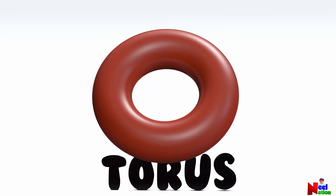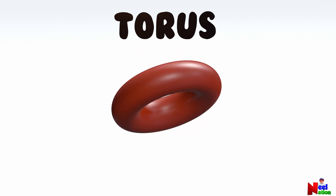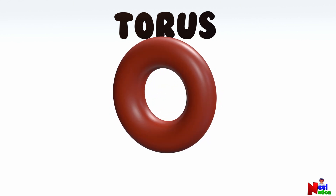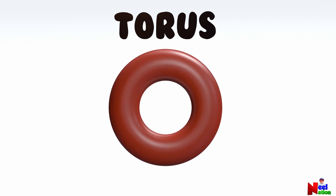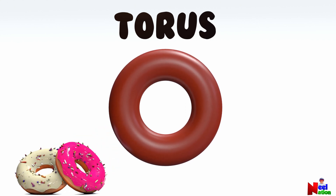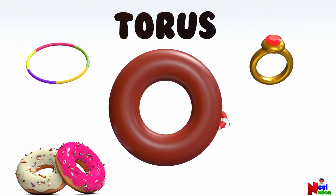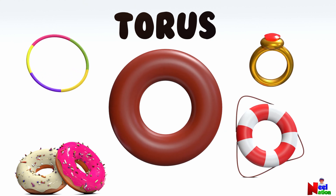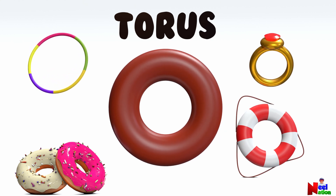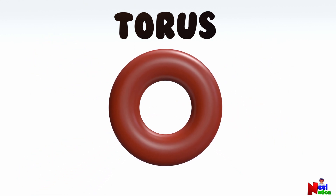This torus shape looks like a ring or a donut. Can you name some torus-shaped objects? A donut, a ring, a hula hoop, and a life saver balloon are all torus-shaped. Wow!